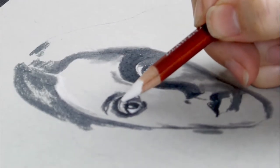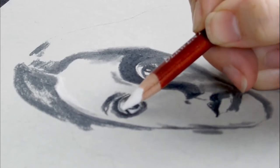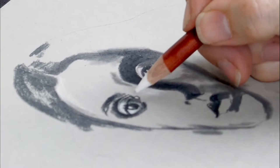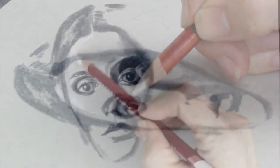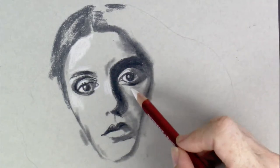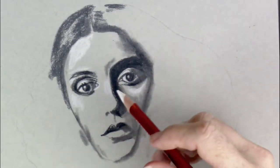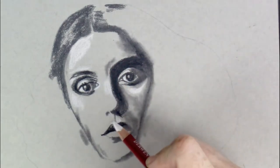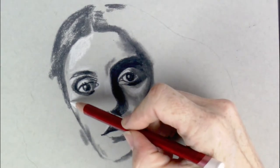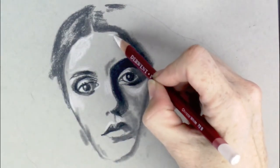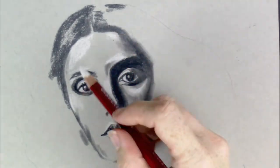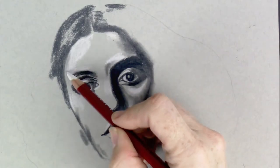And one of the things that you can do with charcoal is you can blend in a number of different ways. You can blend with your fingers, with a cotton tip, with a tissue, with blending stumps of various sizes. So it is a very easy area to manipulate and get the achievable results in more ways than one.